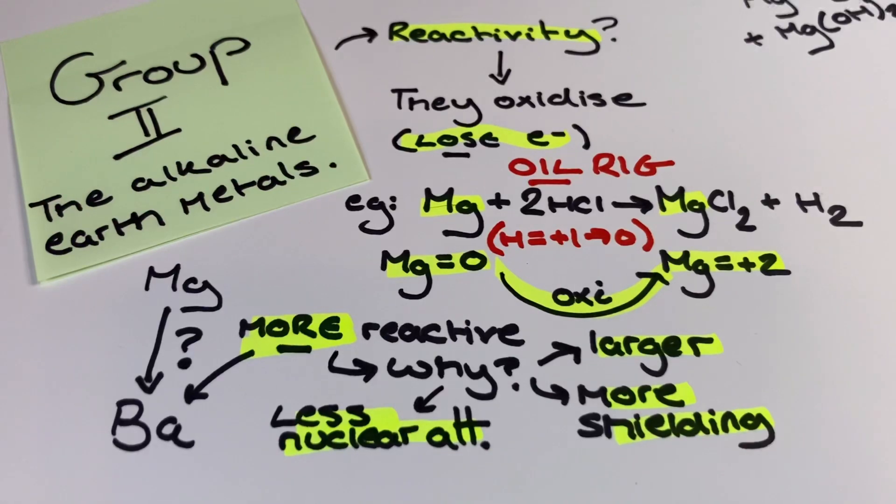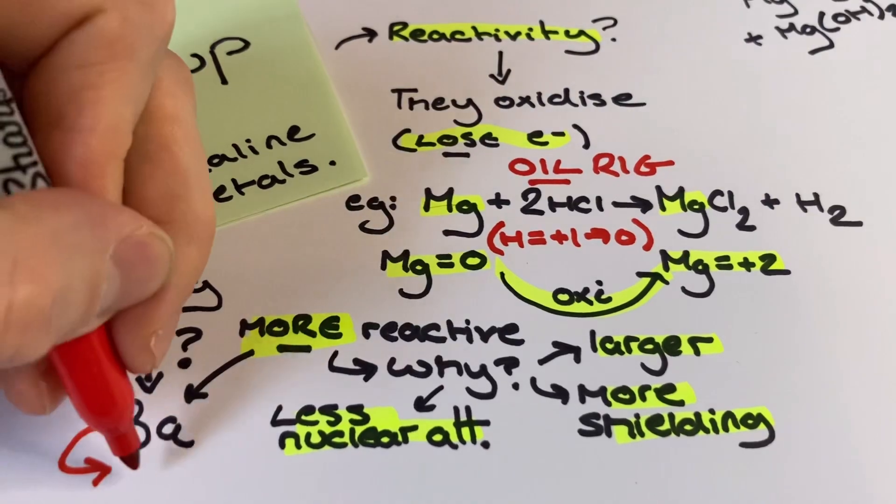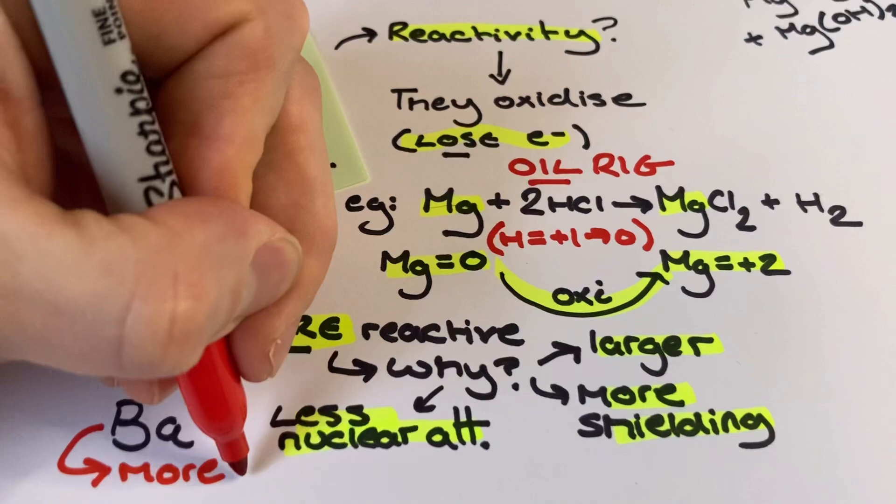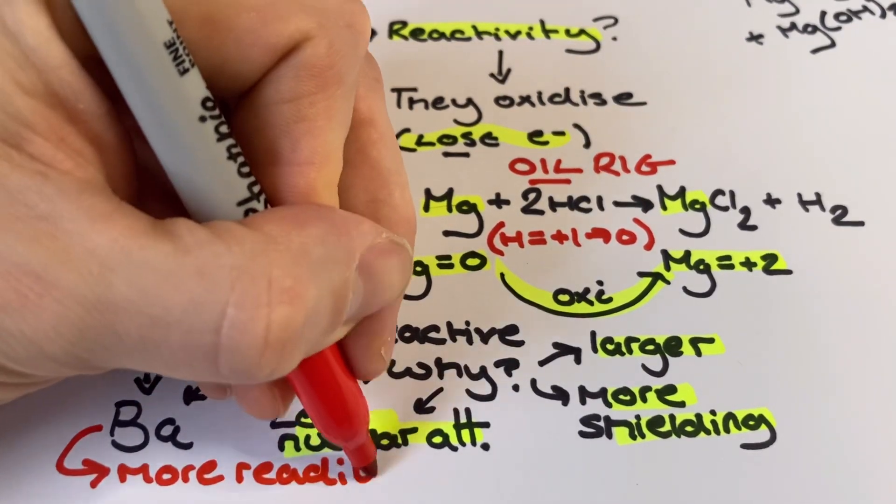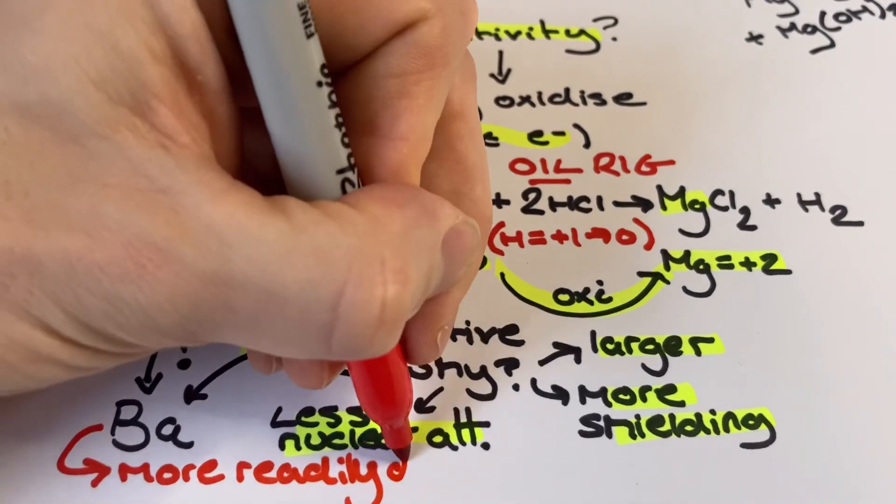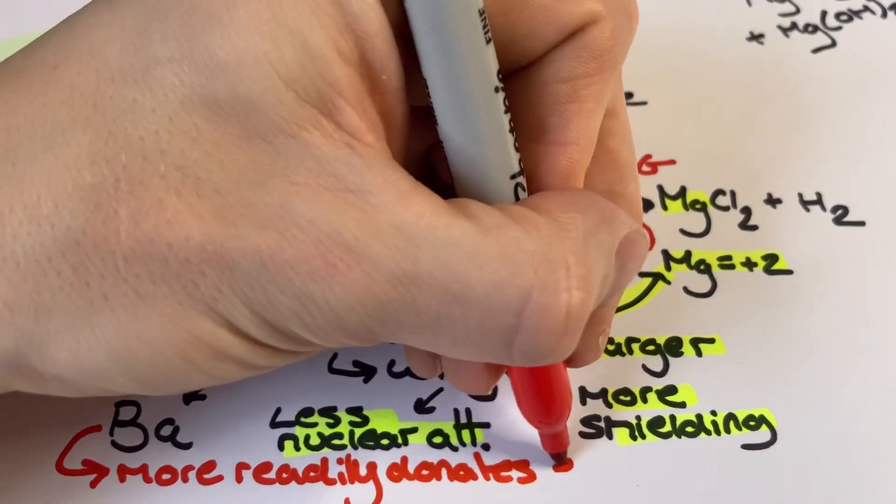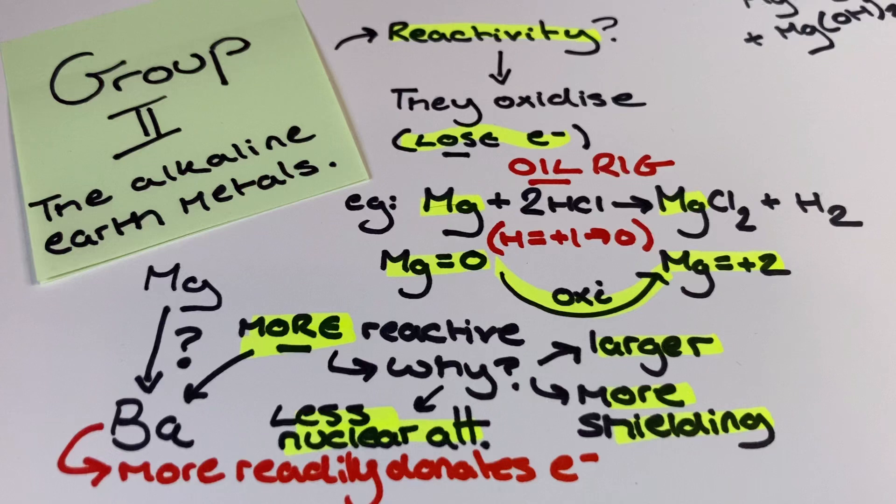Well, down group 2 the reactivity of the group 2 metals increases. Their atomic radius is increasing, which means they're getting larger. Their valence electrons are therefore further from the nucleus and less attracted. Therefore less energy is required to remove them, and hence they donate their electrons more readily the further down the group they are in reactions, and are therefore considered more reactive further down the group.